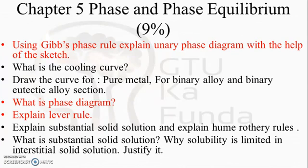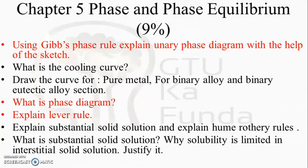Chapter 5 is Phase and Phase Equilibrium, which is an important chapter as per the syllabus. The key questions include: using Gibbs Phase Rule, explain the rule and the phase diagram with a neat sketch; draw the cooling curves of pure metal, binary alloy, and binary eutectic alloy; explain the Lever Rule; explain substitutional solid solution and Hume-Rothery rules — Hume-Rothery rules are again very important; and explain why solubility is limited in interstitial solid solution. Gibbs Phase Rule, phase diagram, and Lever Rule are the most important questions for this chapter.